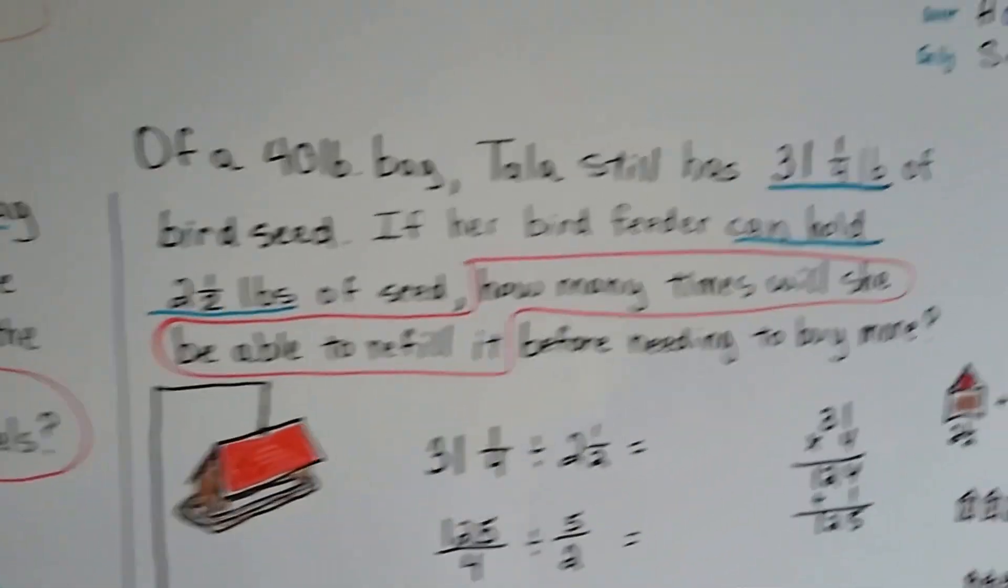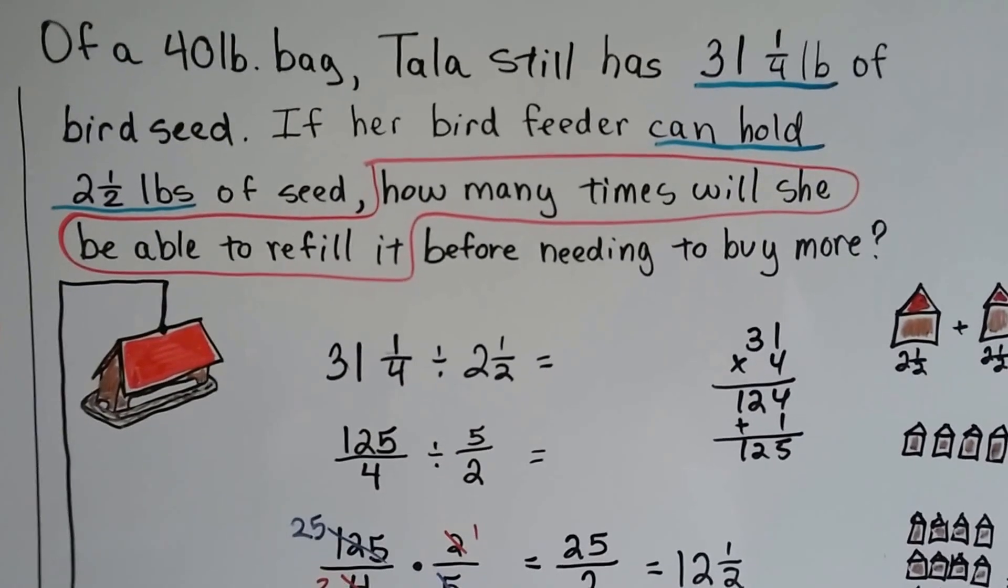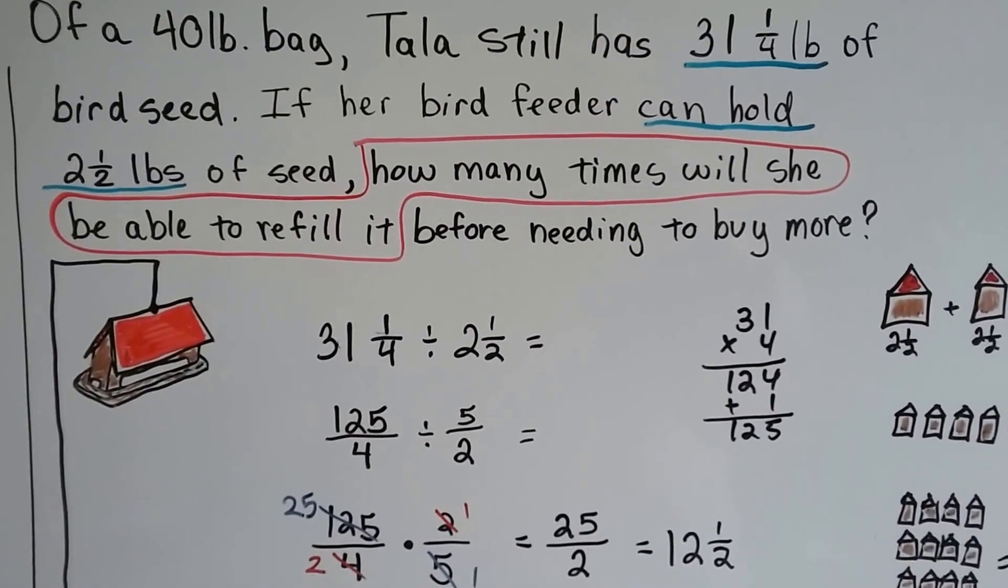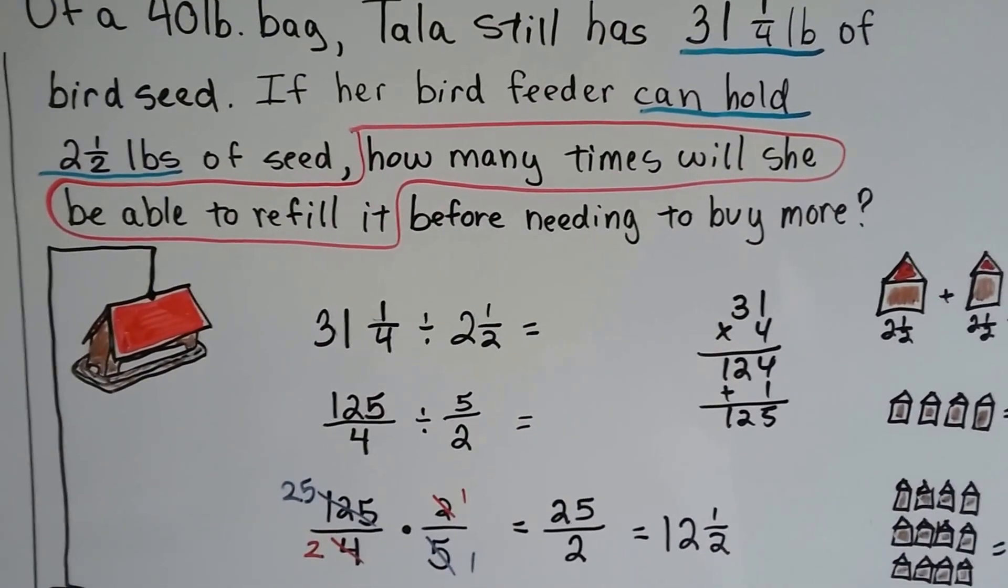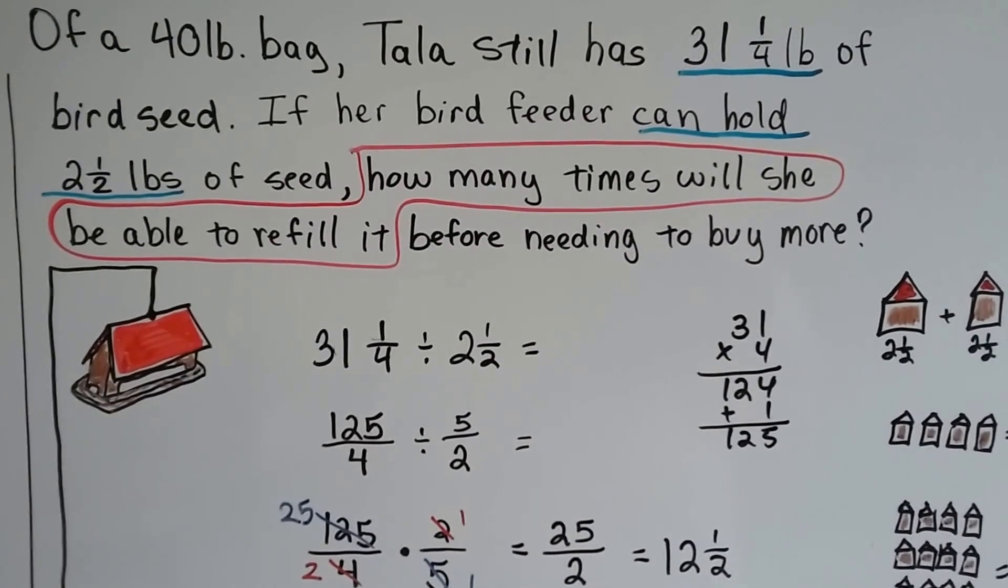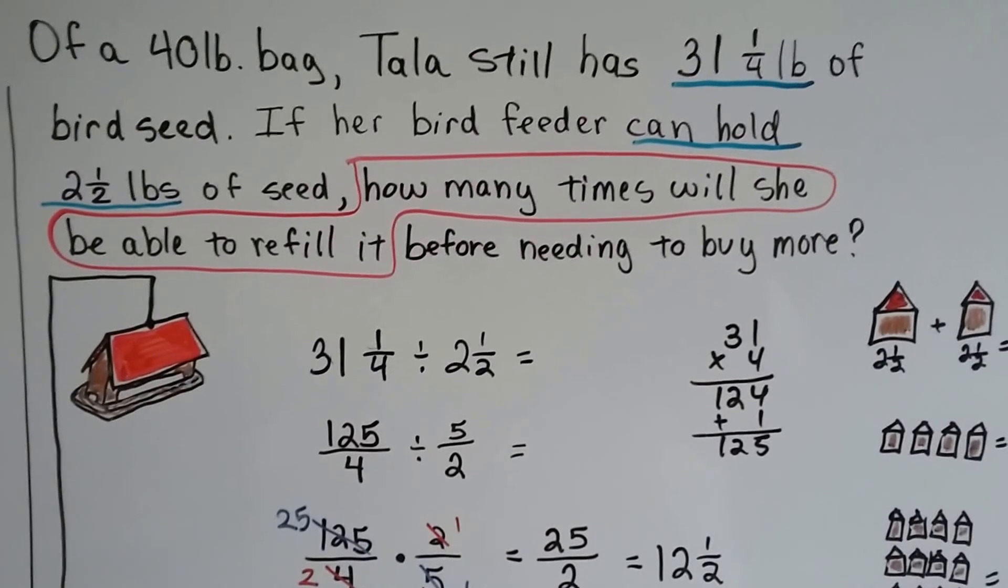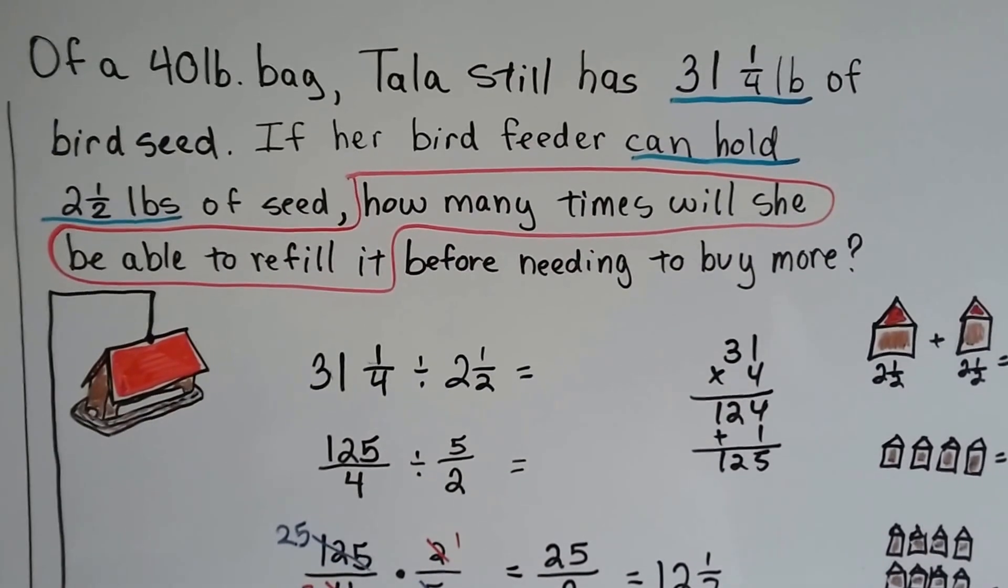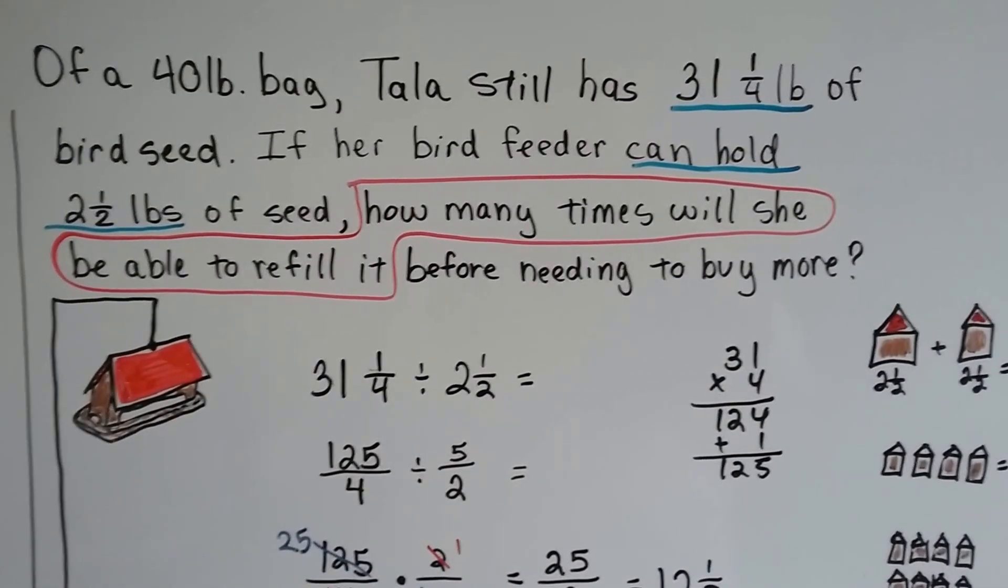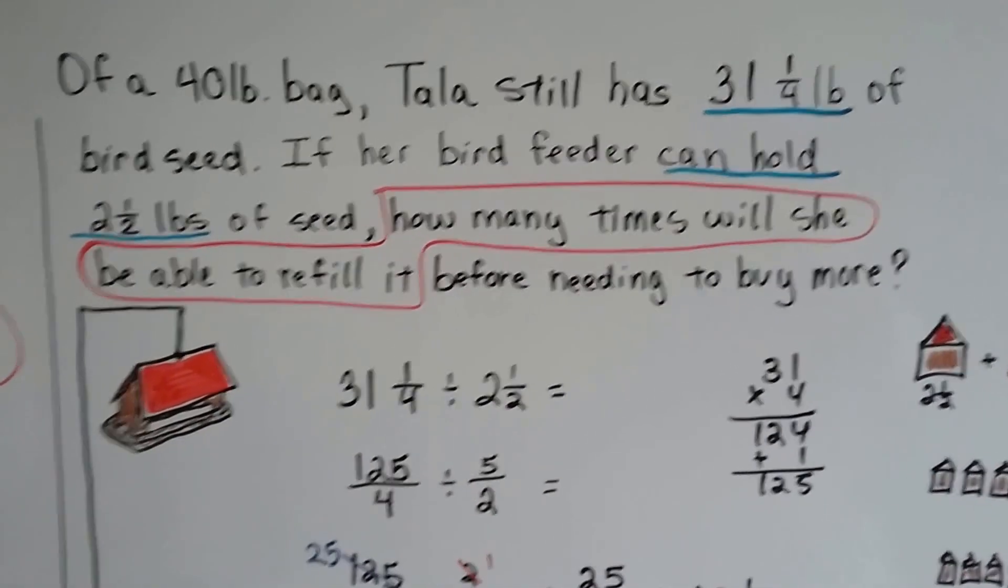Of a forty pound bag, Tala still has thirty-one and a fourth pounds of birdseed. If her bird feeder can hold two and a half pounds of seed, how many times will she be able to refill it before needing to buy more? I circled how many times will she be able to refill it, because that's what we need to find. I underlined the thirty-one and a fourth pounds, and that bird feeder can hold two and a half pounds, because those were the important pieces of information.